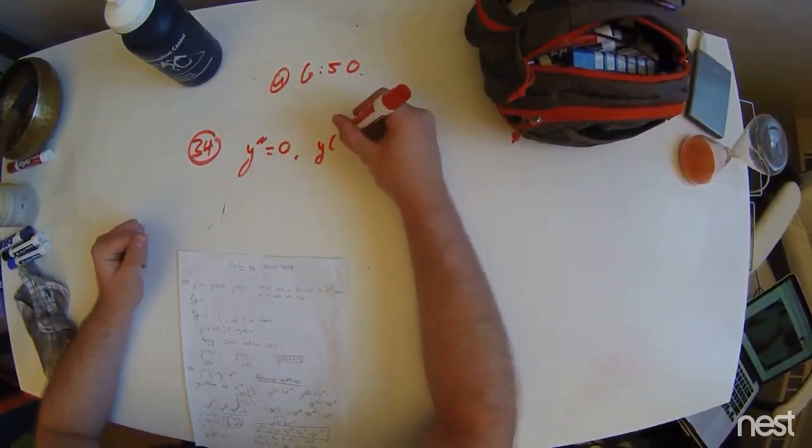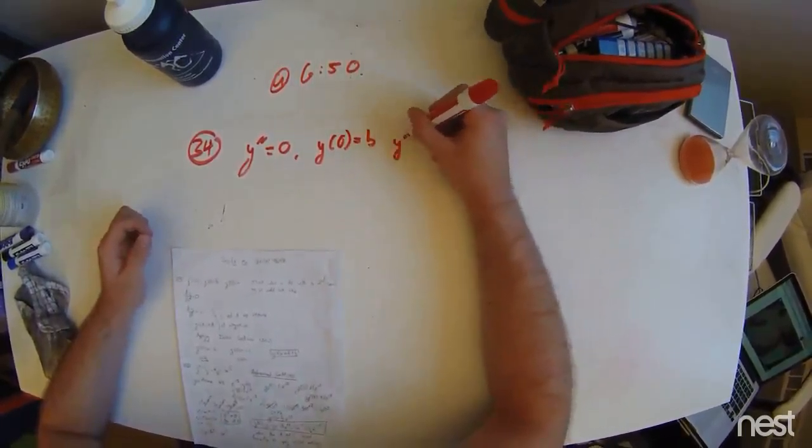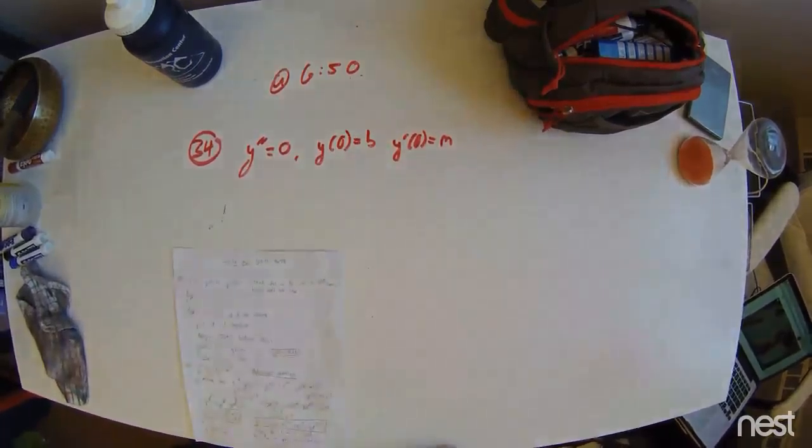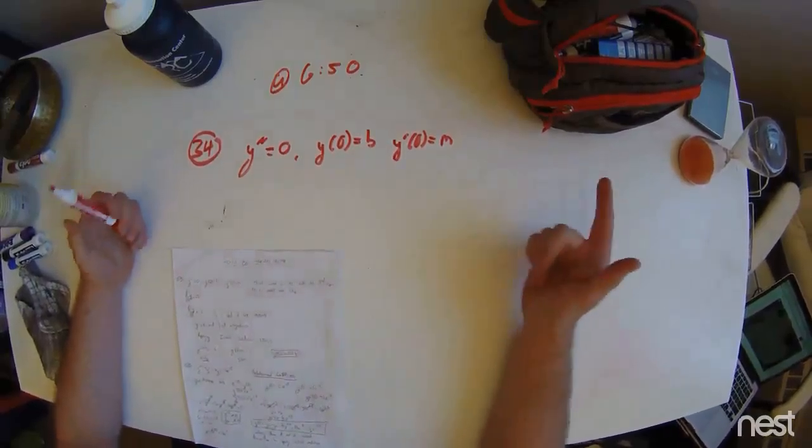So, the initial conditions are y of zero equals b and y prime of zero equals m. Now, think what kind of function that would have its second derivative equal to zero look like.